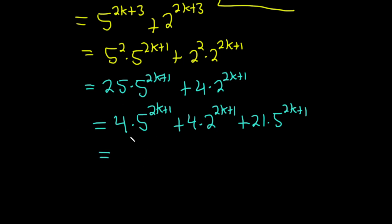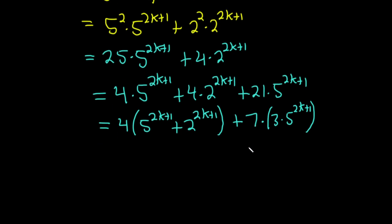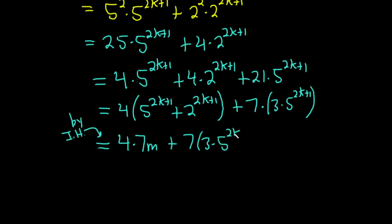Now we can pull out a 4 and get 4 times (5 to the 2k plus 1, plus 2 to the 2k plus 1). In the next step, this is going to be a multiple of 7 by the induction hypothesis. And the remaining 21 times 5 to the 2k plus 1 is beautiful — since 21 equals 7 times 3, that piece becomes 7 times 3 times 5 to the 2k plus 1. So we have 4 times 7m, by the induction hypothesis, plus 7 times 3 times 5 to the 2k plus 1, for some integer m greater than or equal to 0.